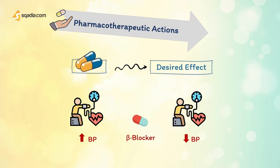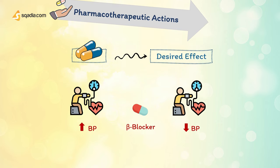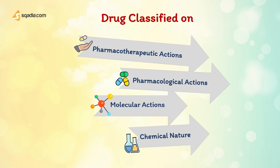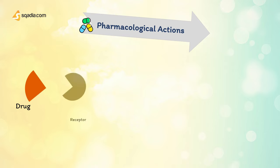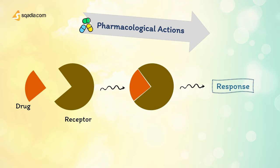The dose of the drug is another important parameter which determines its action. The second classification property is pharmacological actions. For example, beta blockers work by blocking the effects of the hormone epinephrine, also known as adrenaline. When a drug binds to its respective receptor, it initiates a response. Beta blockers cause the heart to beat more slowly and with less force, which lowers blood pressure. This is the pharmacological action produced by a drug.